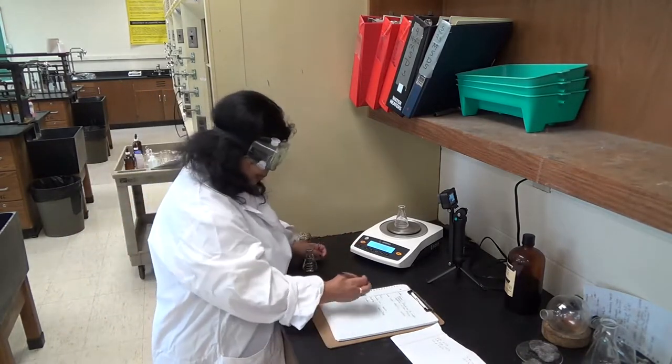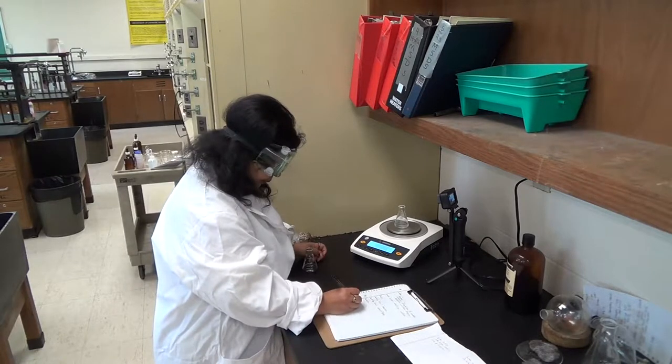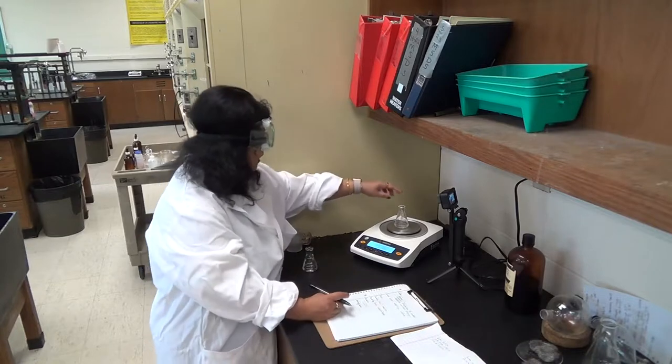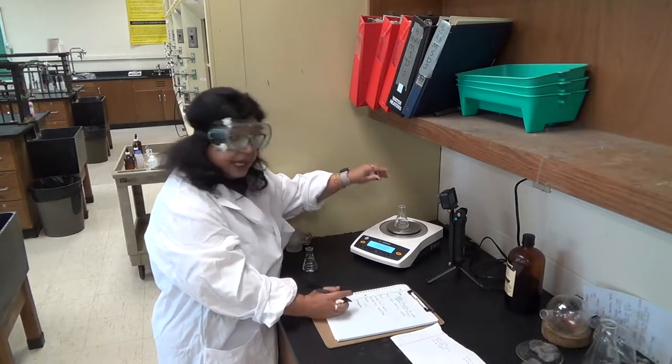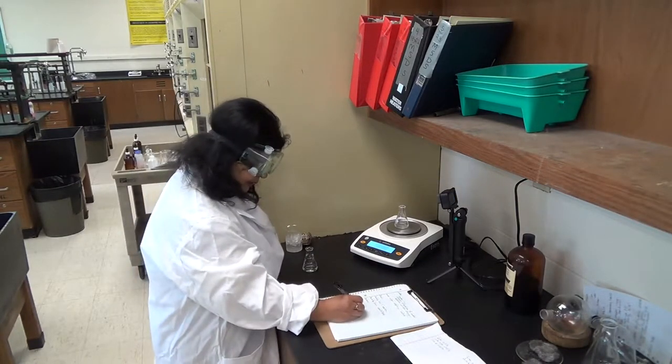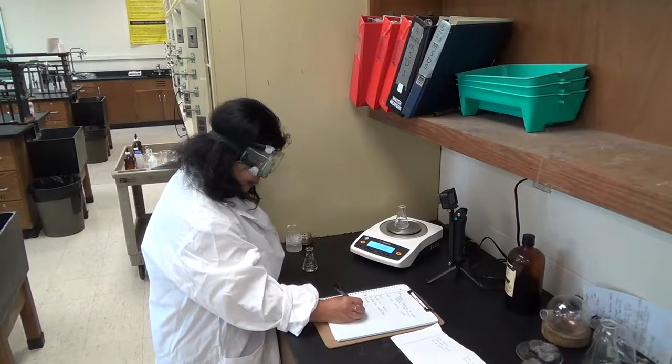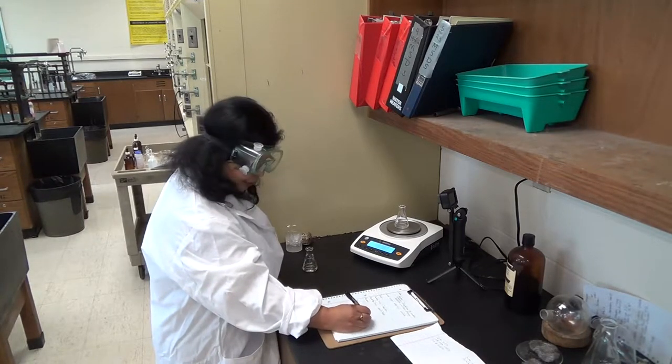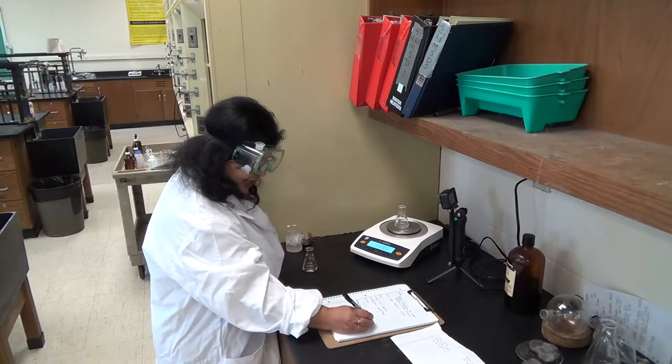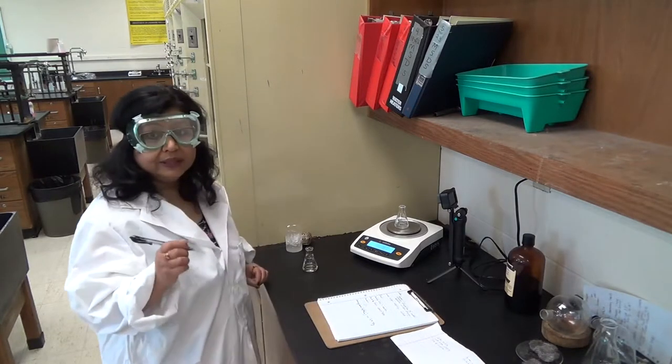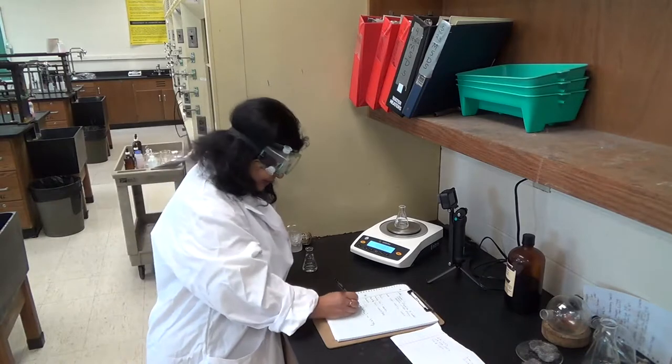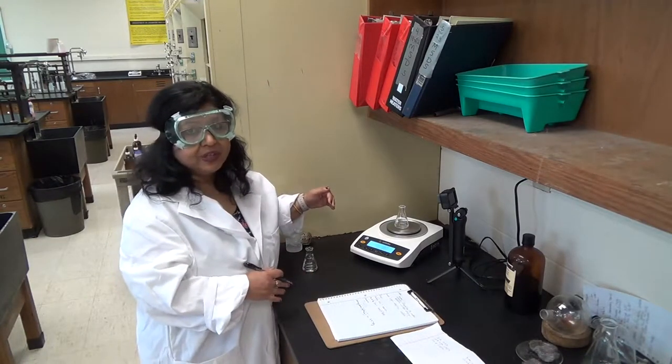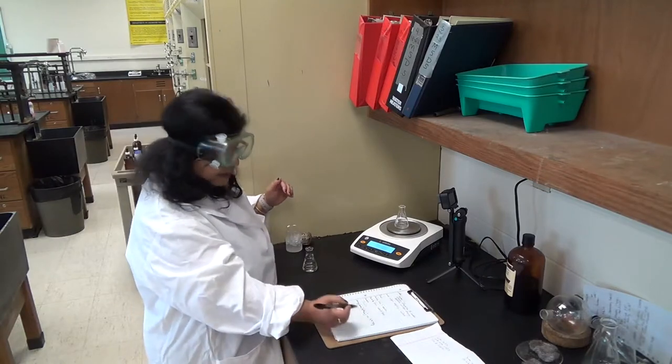So this weighs, so this is my flask with calcium nitrate, and it's weighing 49.78 grams with the flask. Okay, so mass of the flask plus calcium nitrate is 49.78 grams.